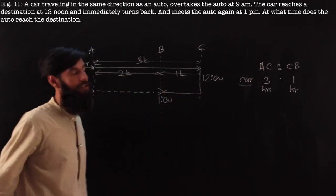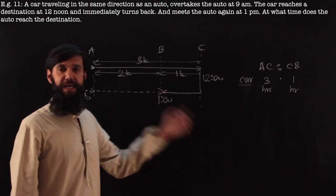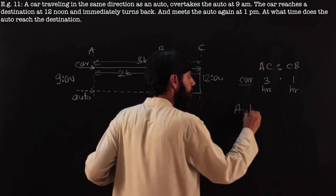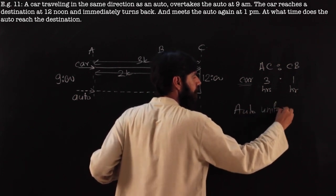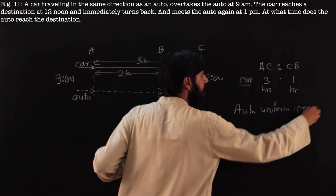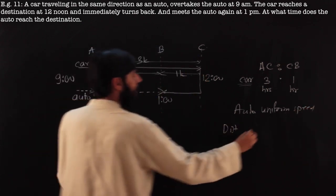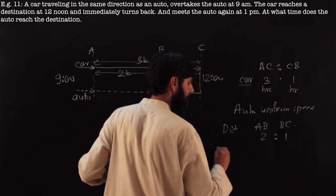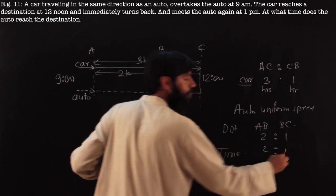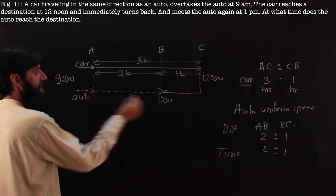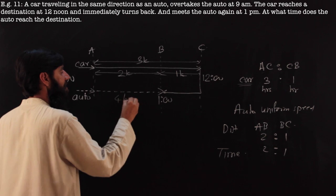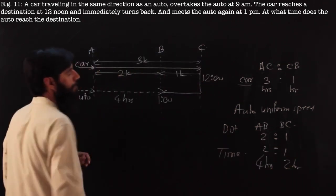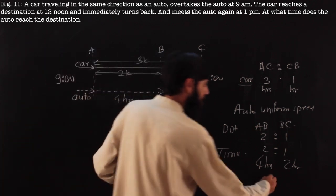That means A to B is 2k, so the distances are in the ratio 2:1 for AB and AC. Now shifting focus to the auto: at uniform speed, for distances A to B and B to C in the ratio 2:1, time taken is also in the ratio 2:1. The auto takes from 9 a.m. to 1 p.m., which is 4 hours total, covering A to B. So the auto will take 2 more hours for B to C.